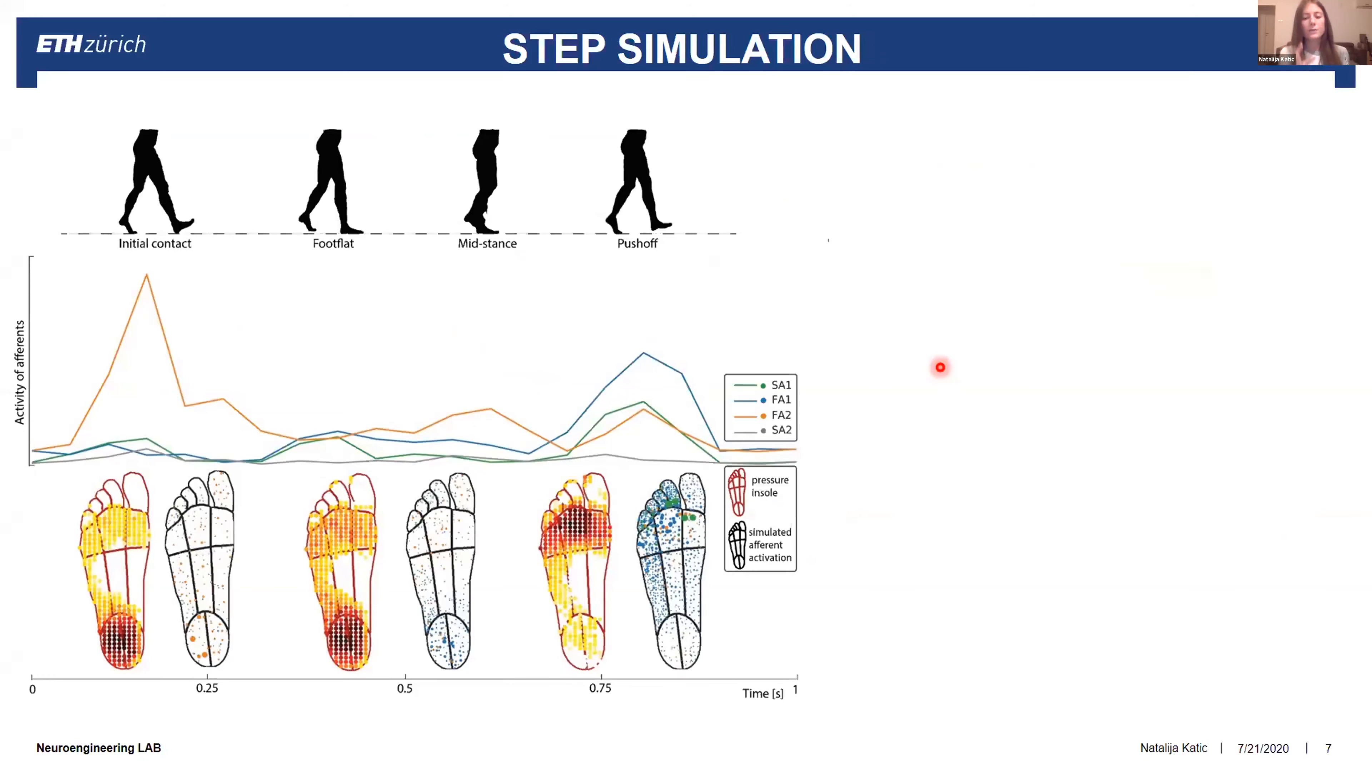FA2s are the most sensitive to perpendicular light touch and also have the biggest receptive fields that cover the entire sole of the feet. This is why we can expect that they have high activity during the whole gait cycle. Also, the transient events are mostly detected by Pacinian corpuscles, FA2s, and therefore the activity is at the highest level during the initial contact of the gait. FA1s, on the other hand, have the highest density on the toes and this is why they have this peak during the push-off phase.